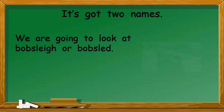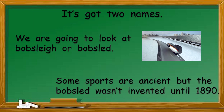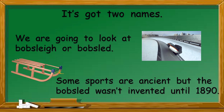They are very similar. It's super fast, and that small car-looking thing is the bobsleigh. Maybe I'll keep changing the names so that you can understand they're both okay. Some sports are ancient, but the bobsled wasn't invented until 1890 — maybe just a little wooden tray back then. Now everything is super modern, that's why it's so expensive. About 130 years ago, so we could say it's a modern sport.